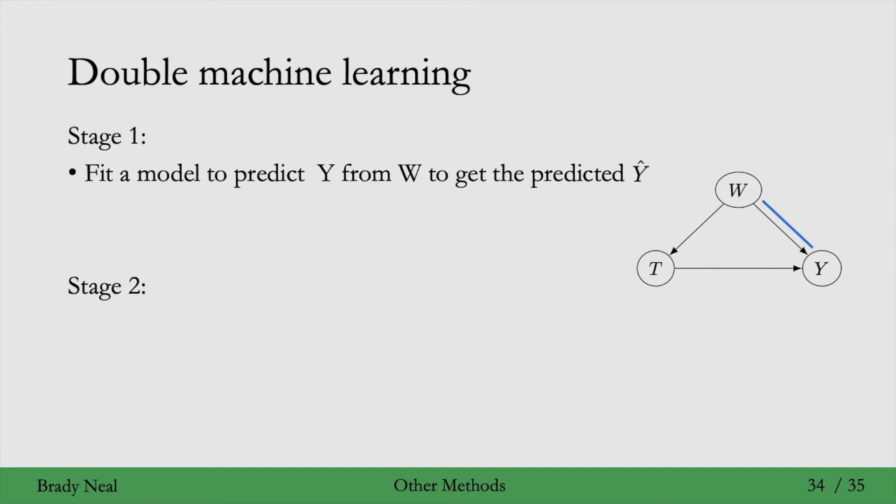So in the first stage, we do two things. The first, we fit a model to predict Y from W to get the predicted Y-hat. We also fit a model to predict T from W to get the predicted T-hat. And that's stage one.